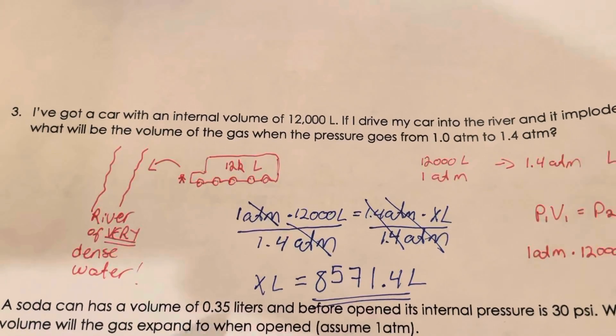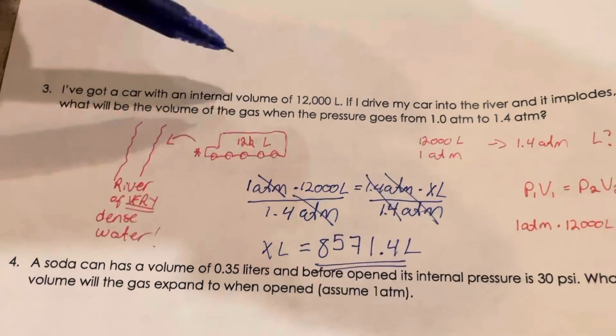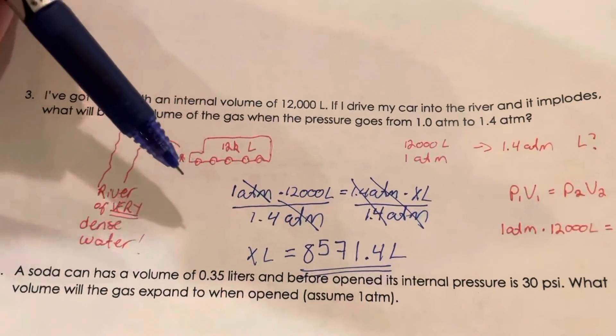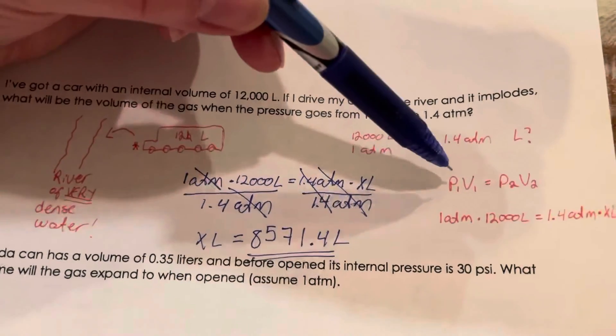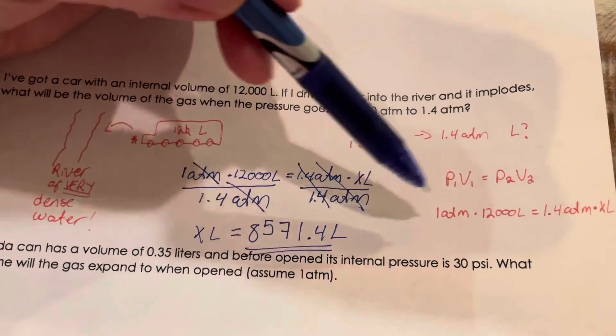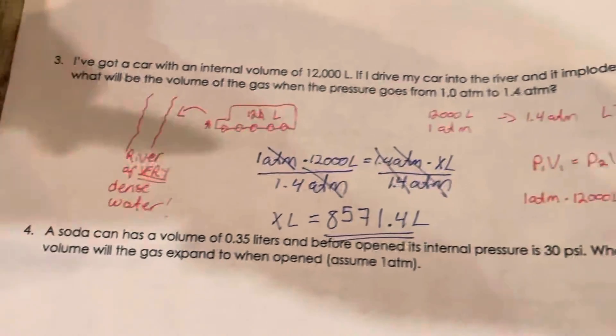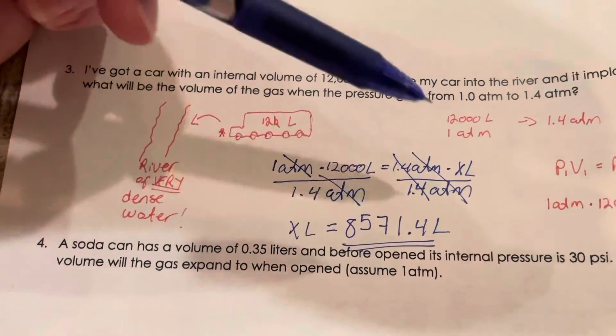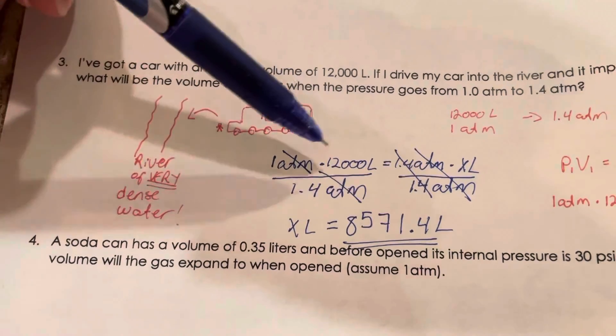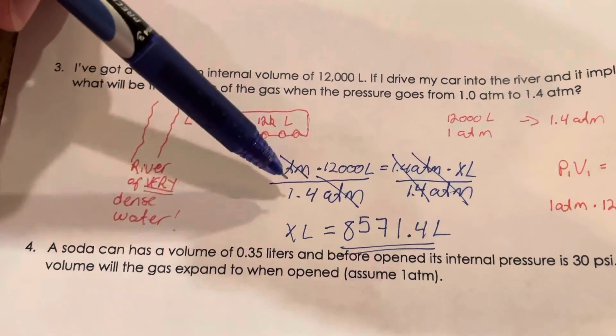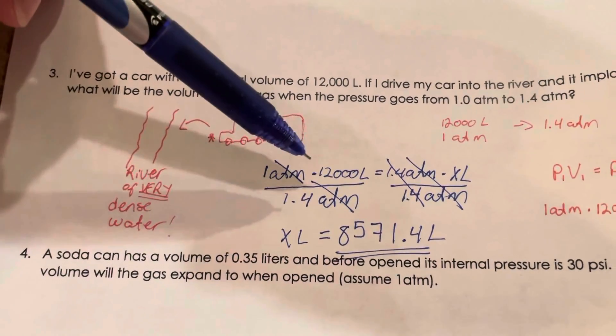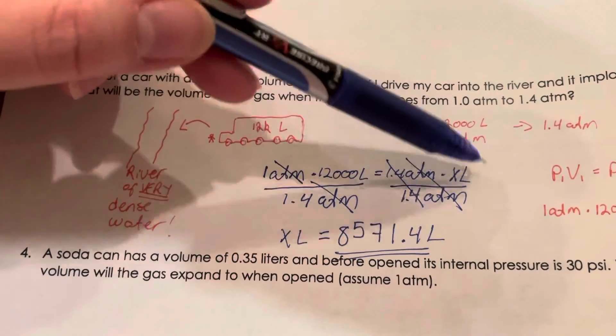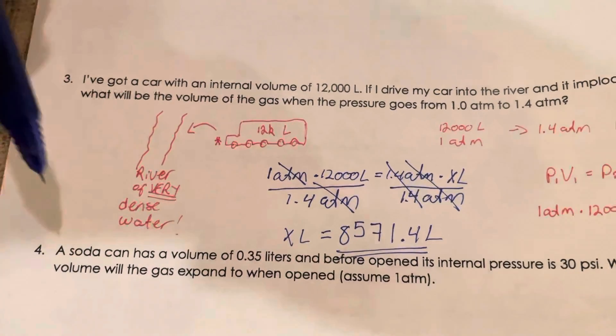So again you solve this for X, you have to do algebra, put in the information that you have in Boyle's law and then just do algebra, solve it for X. If I divide on one side I have to do it on the other, if I multiply one side I have to multiply it on the other. So just make sure that you isolate X on one side because you're solving it for X.